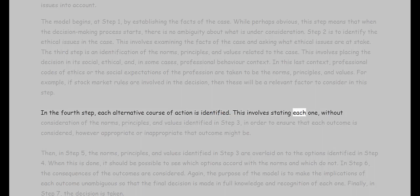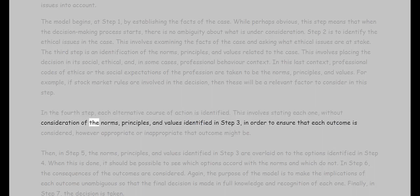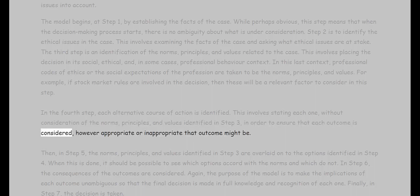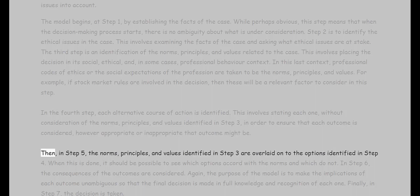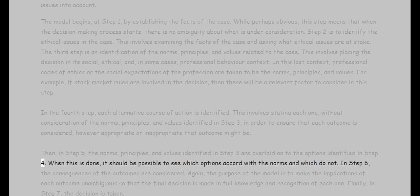Step four involves stating each alternative course of action, without consideration of the norms, principles, and values identified in step three, in order to ensure that each outcome is considered, however appropriate or inappropriate that outcome might be. Then, in step five, the norms, principles, and values identified in step three are overlaid onto the options identified in step four. When this is done, it should be possible to see which options accord with the norms and which do not.